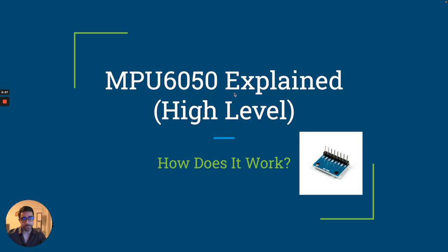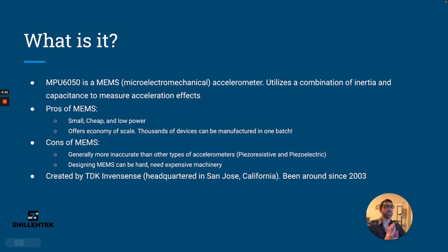High level overview: first of all, what is it? We know it's an accelerometer, but what type? The MPU6050 is specifically a MEMS - a microelectromechanical accelerometer. What that means is it uses a combination of mechanical and electrical properties, specifically inertia and capacitance, to measure acceleration effects. We'll talk about that in more detail further in this video.